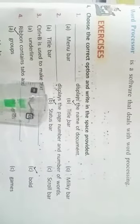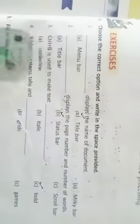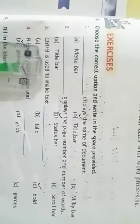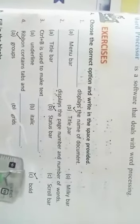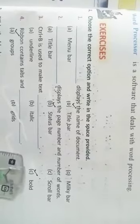Status bar displays the page number and the number of words. Control+B is used to make text underline, italic, or bold. We use Control+B to make the text bold.